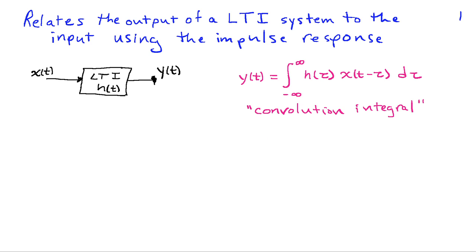Convolution of continuous time signals is best evaluated graphically. Recall that convolution relates the output of a linear time-invariant system to the input in terms of the impulse response. We can write the output y(t) as the integral from minus infinity to infinity of h(τ) · x(t − τ) dτ, and this is known as the convolution integral.